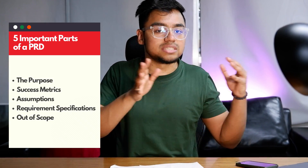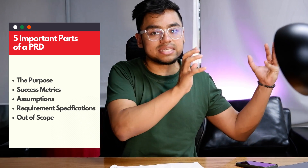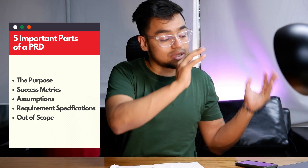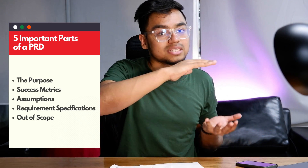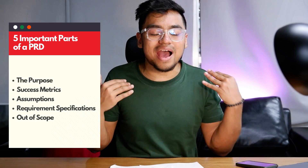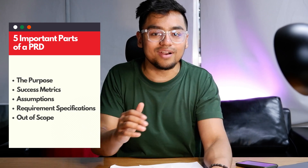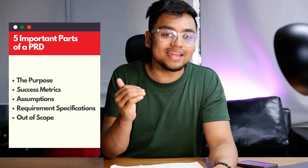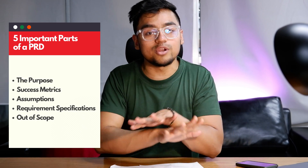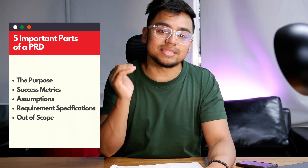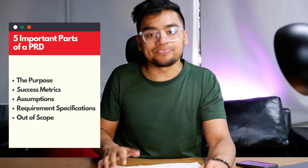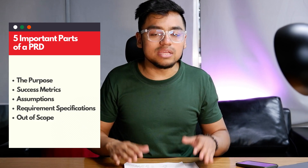So those are the five parts: it's all about the purpose, the assumptions, the metrics, the actual product specifications detailing how the product will work, and finally what we're not doing — the items that are out of scope.